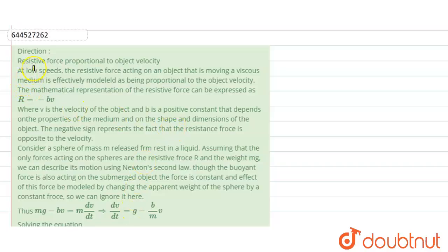Let us start with our question. This is a passage-based question. The resistive force is proportional to the object velocity at low speed. The resistive force acting on a body moving in a viscous medium is given as R equals minus b times v, where v is the velocity of the object and b is a positive constant that depends on the properties of the medium. The negative sign represents that the resistive force is opposite to the velocity.